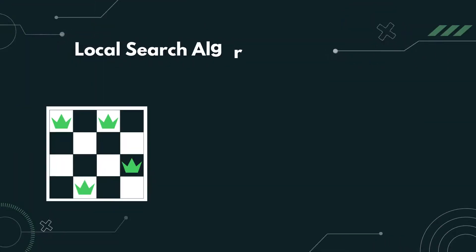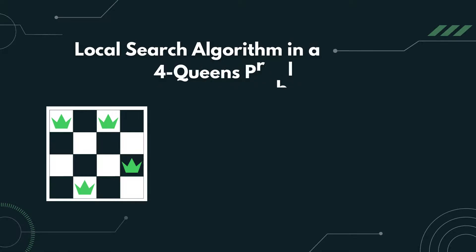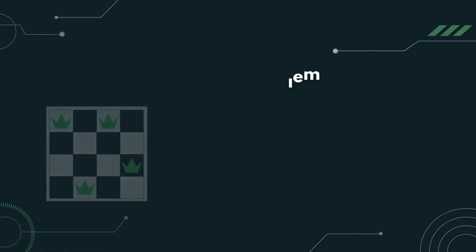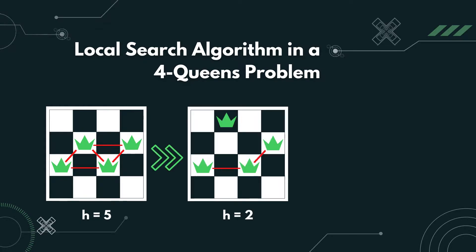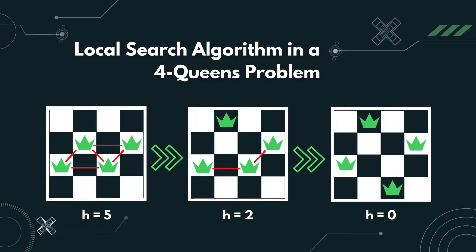In this 4 queens problem, we look to minimize the heuristic function, denoted as h. In this initial state, the value of h is 5, which means there are 5 ways the queens can attack each other. When we move one of the queens upwards, the value of h is reduced to 2. And finally, when another queen is moved downwards, the value of h becomes 0, meaning no queen can attack another.